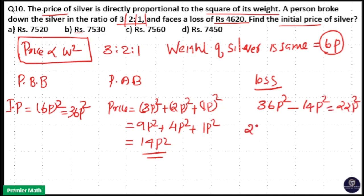Here this 22 P square loss is equal to the 4620. So P square is equal to 4620 divided by 22.